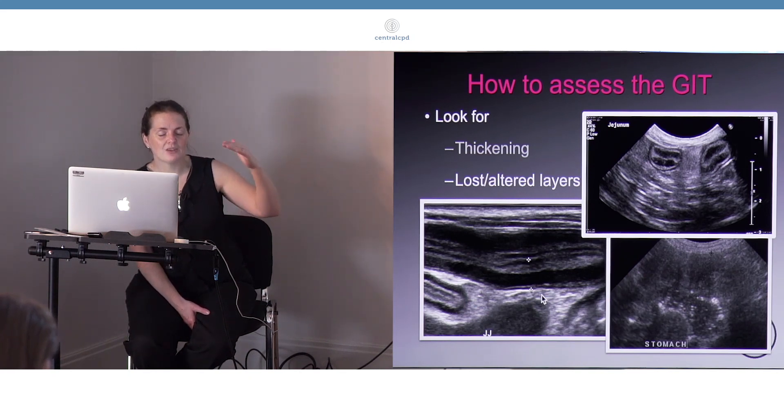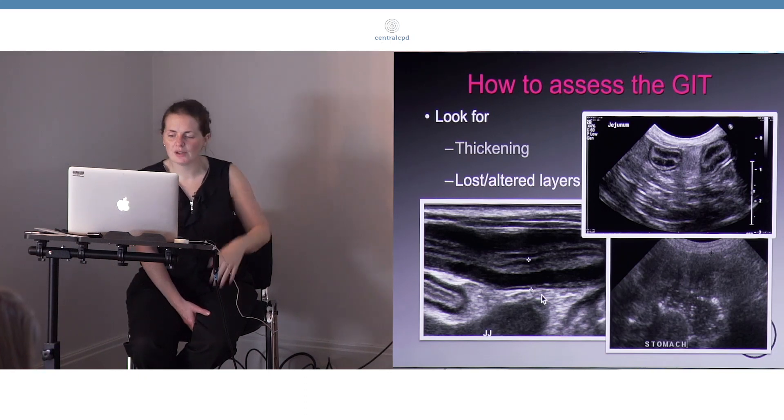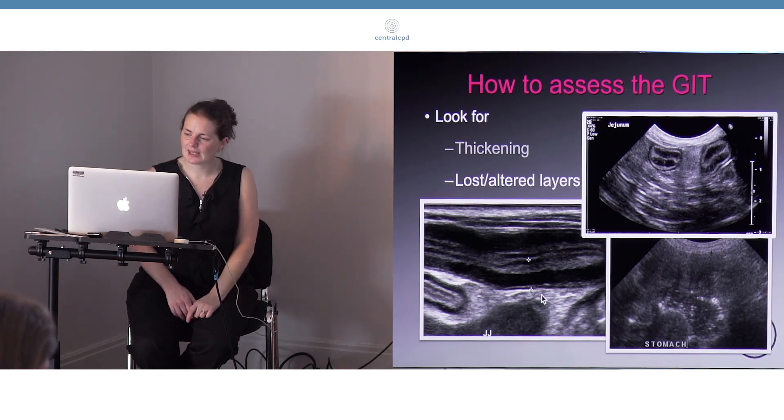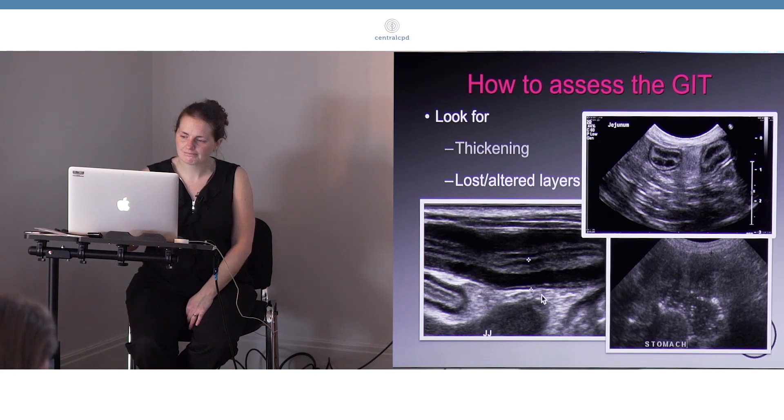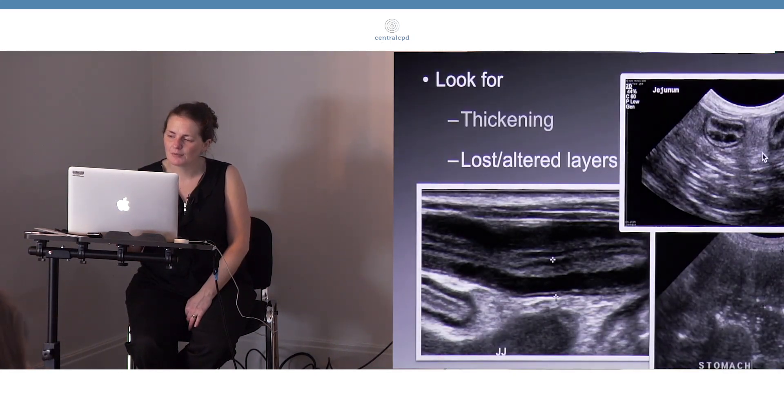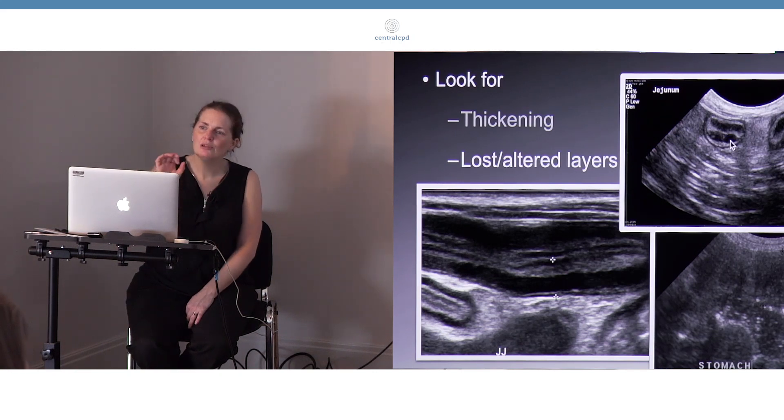So having an extra layer is not necessarily a worrying finding, but I think it's worth certainly looking at and making sure that you then assess the distribution of your layers, which certainly has been associated with clinical disease. And the final example I want to show in this sort of appearance is when we look at the mucosal layer.